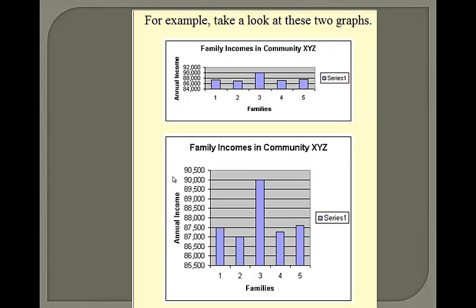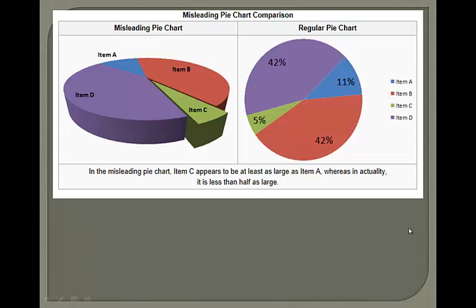Here's a couple of graphs. In this first one, family income goes from $84,000 to $92,000 and they all look about the same. But if you stretch that scale out — going up by $500 increments instead of $2,000 — it looks like one family is making so much more than everybody else, when really they're only making about $2,500 more a year than the other families. That's what scale manipulation does.